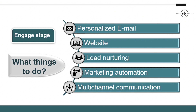Third is lead nurturing — you have to nurture your leads like growing plants, because they can give you fruit later if you nurture them well at this stage. Another one is marketing automation; there are various tools available in the market for this. The last one is multi-channel communication — you should never rely on only one channel, so that if one channel is lost, another is still there to communicate with your prospects or business partners.